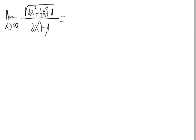Let's calculate the limit when x approaches infinity of the square root of 2x to the 4th plus 4x squared plus 1, divided by 2x squared plus 1.